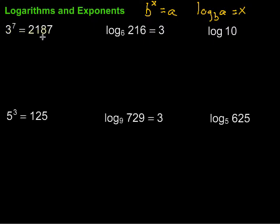Here we have 3 to the 7th power is equal to 2187. We can write that as a logarithm by doing that conversion. So the log, and my base is this part right here, the base, log base 3 of 2187 is equal to 7.